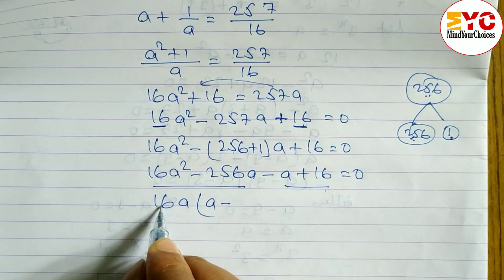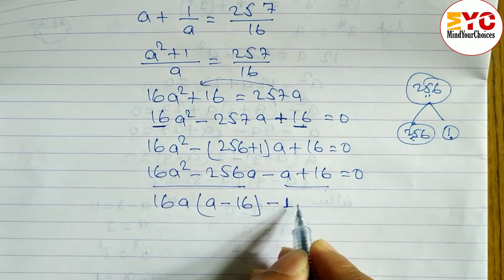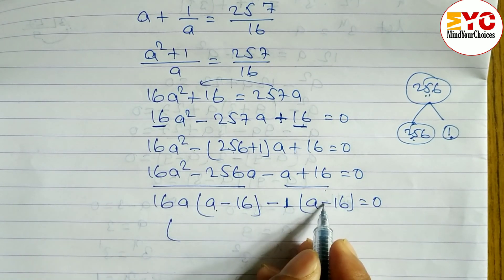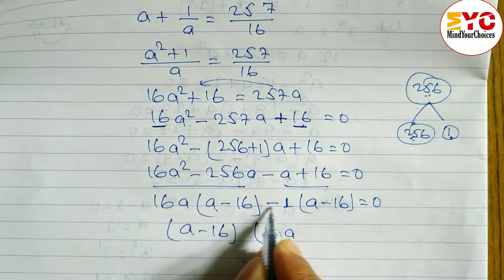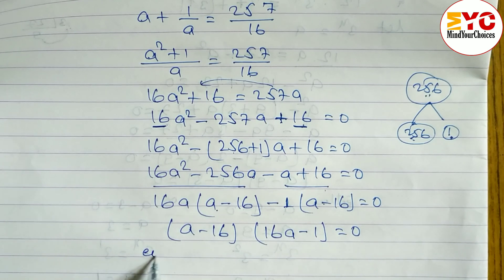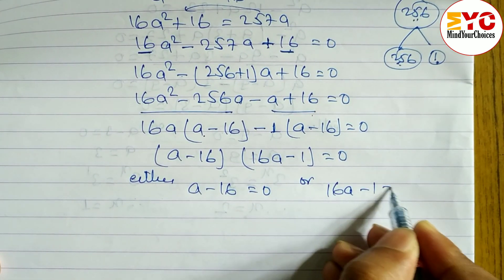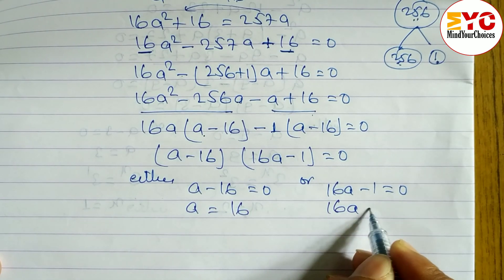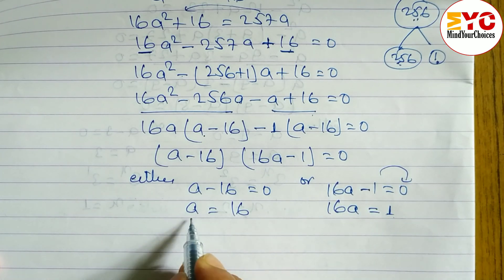Taking 16a common from the first two terms gives (a - 16), and taking -1 common from the last two terms also gives (a - 16). So we factor out (a - 16): (a - 16)(16a - 1) = 0. Therefore either a - 16 = 0, giving a = 16, or 16a - 1 = 0, giving a = 1/16.